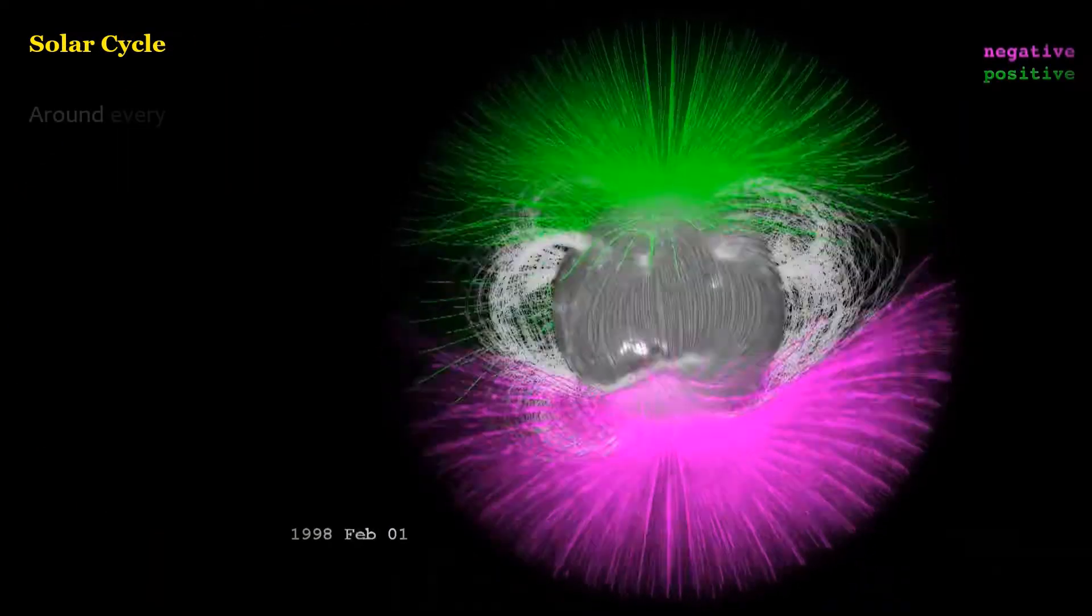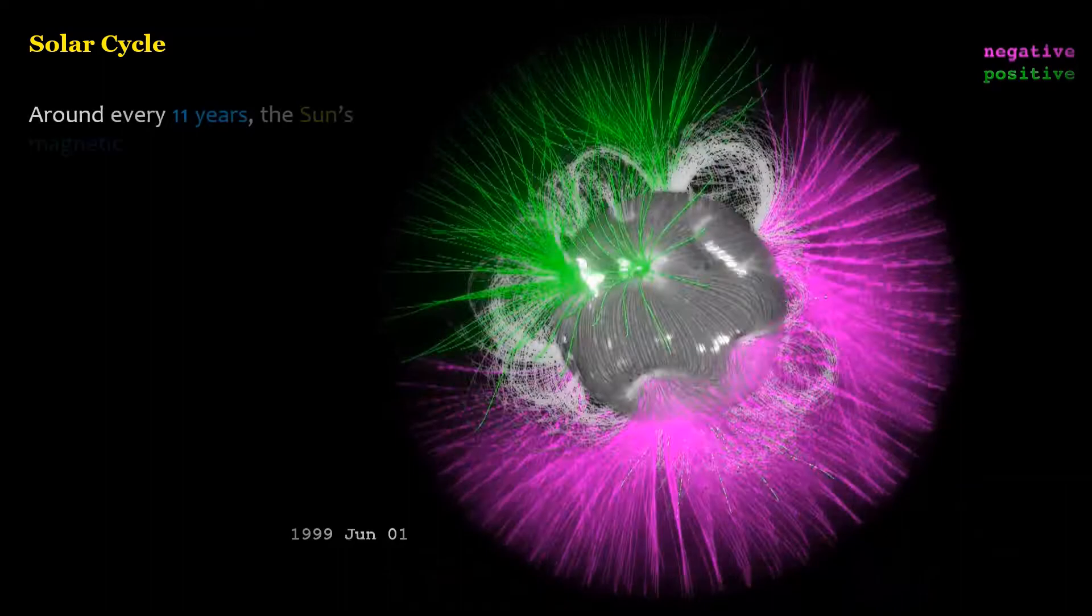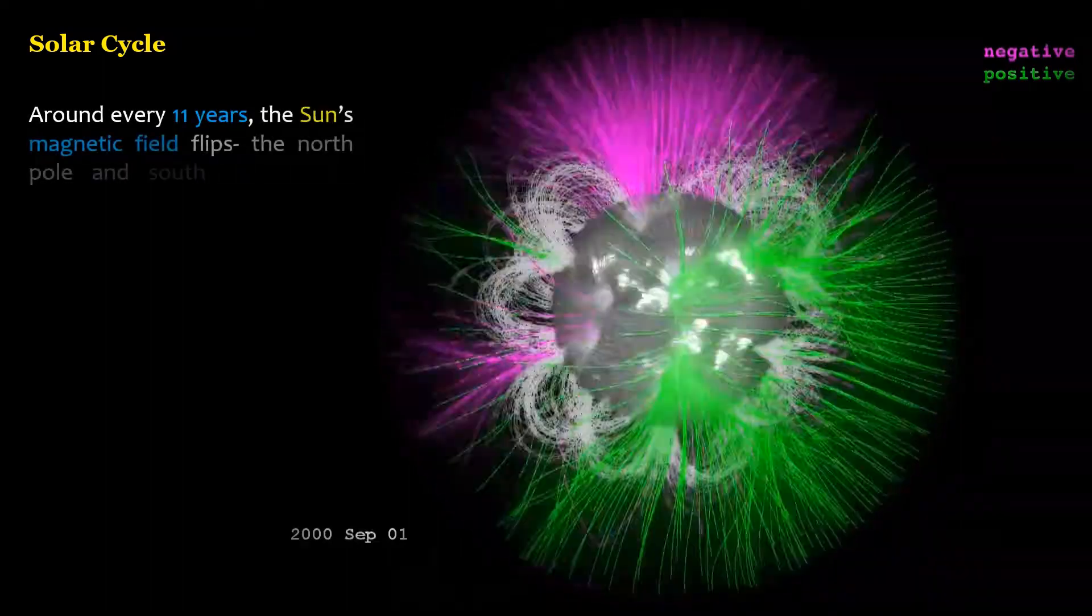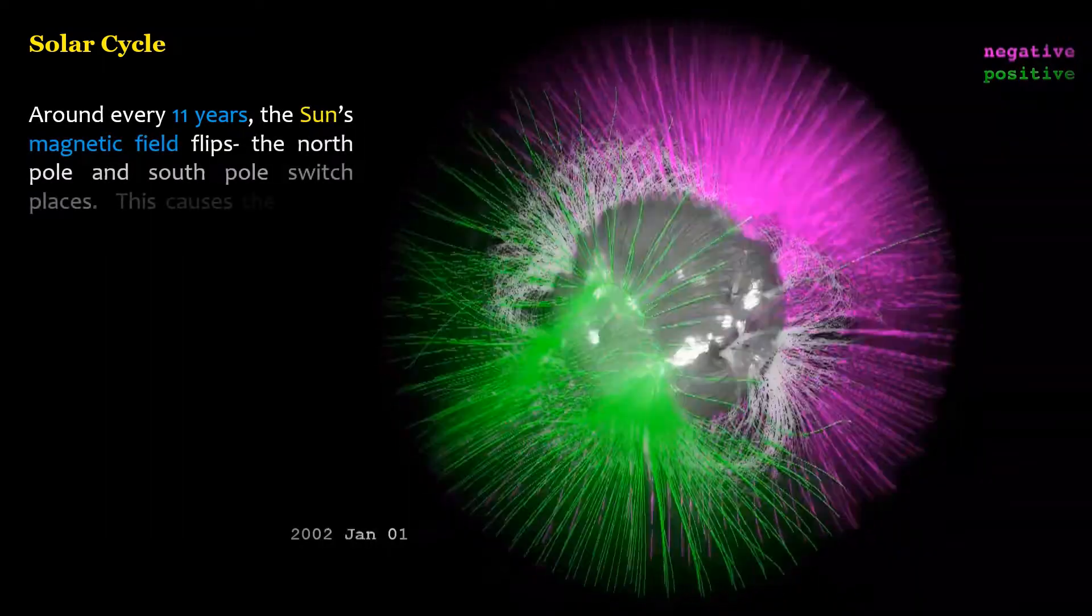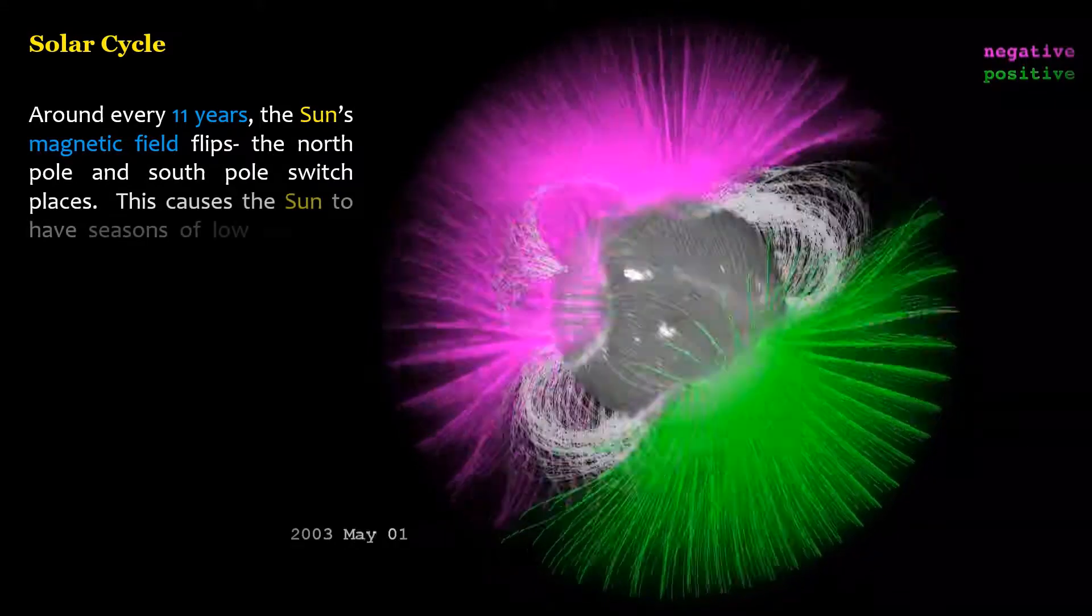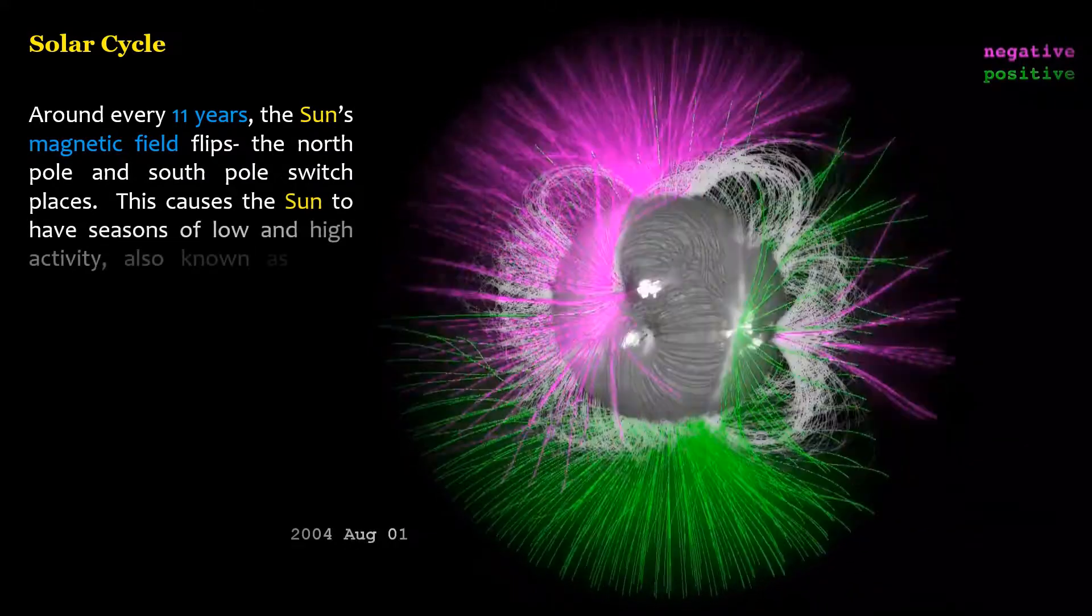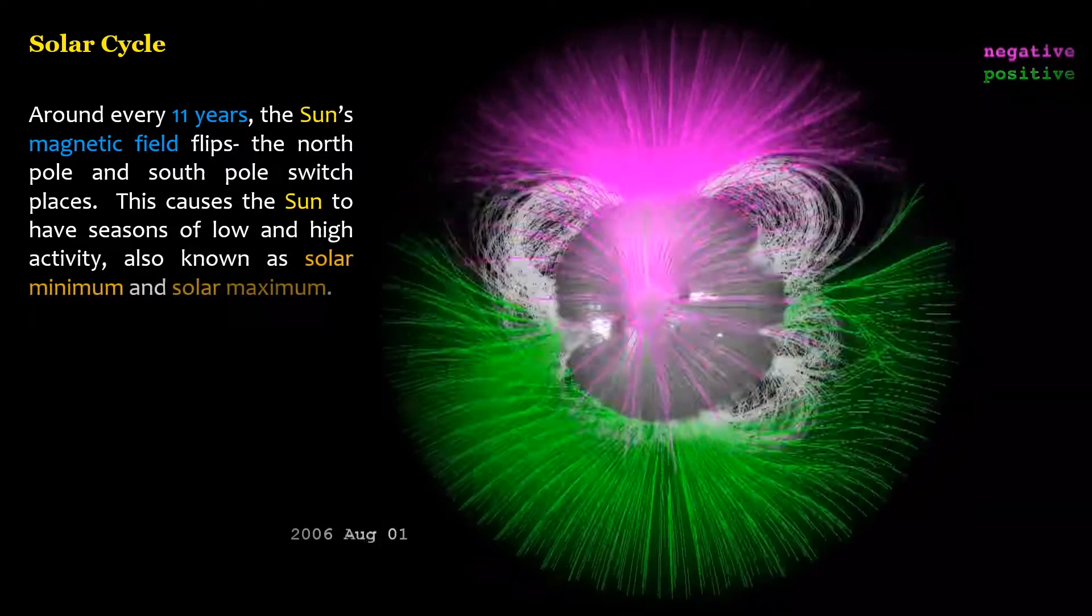Around every 11 years, the sun's magnetic field flips, the north pole and south pole switch places. This causes the sun to have seasons of low and high activity, also known as solar minimum and solar maximum.